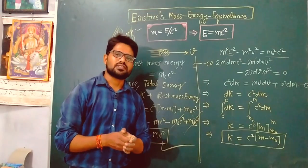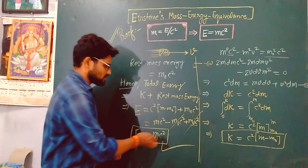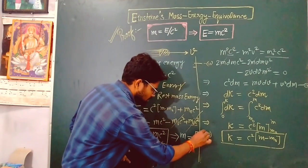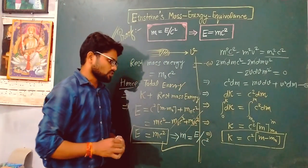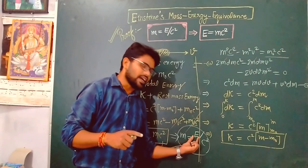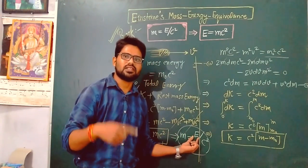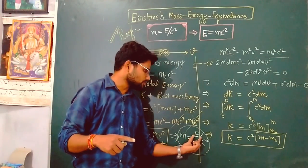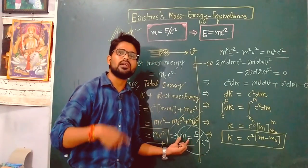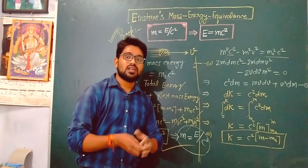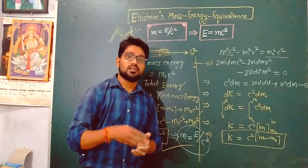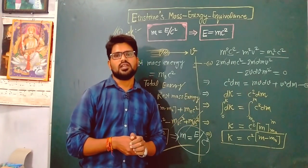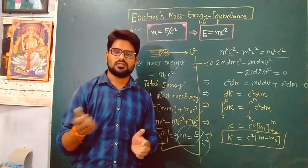This is the famous Einstein mass-energy equivalence relation. From here, the mass of the object at any instant equals net energy divided by the square of the velocity of light: M equals E/c². The meaning is that whenever you supply any type of energy — light energy, electrical energy, heat energy — there is always an increment in the mass of the object. This concludes the proof. If you have any doubts, please ask in the comment box below. Thank you.